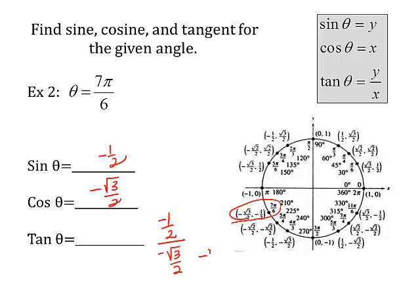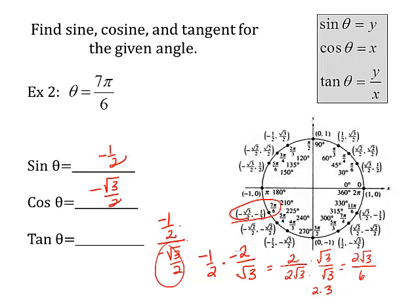All right? So I take a negative 1 half, keep it, change it to multiplication, flip the bottom over. Negative 2 over the square root of 3. Now I multiply. Well, a negative times a negative makes it positive. 1 times 2 is 2 over 2 square roots of 3. Now I have to rationalize this. So the square root of 3, square root of 3, 2 square roots of 3 over, this will be 2 times 3, so that's over 6. That reduces to 3. So the tangent is the square root of 3 over 3.